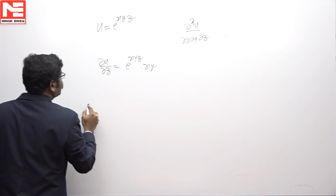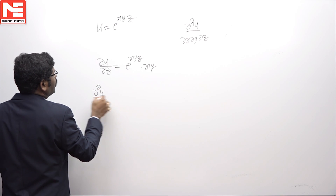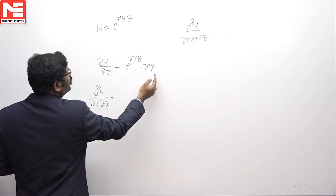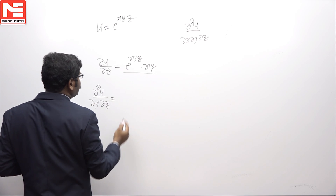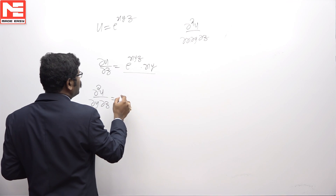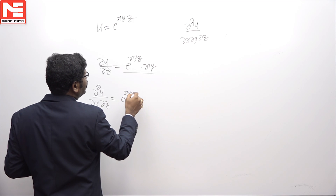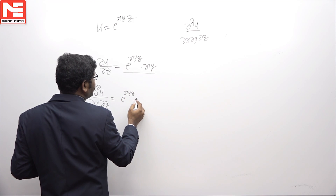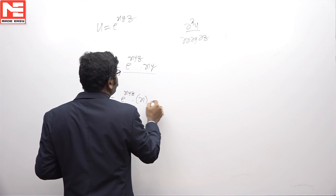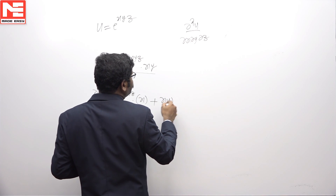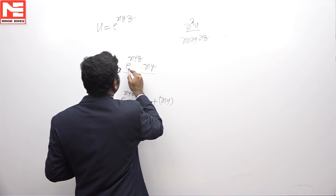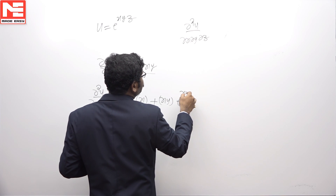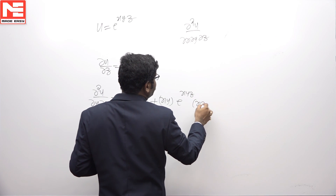Del square u by del y del z: we have to differentiate this with respect to y. So, e power xyz into differentiation of xy with respect to y is x, plus xy into differentiation of e power xyz with respect to y, which is e power xyz into xz.